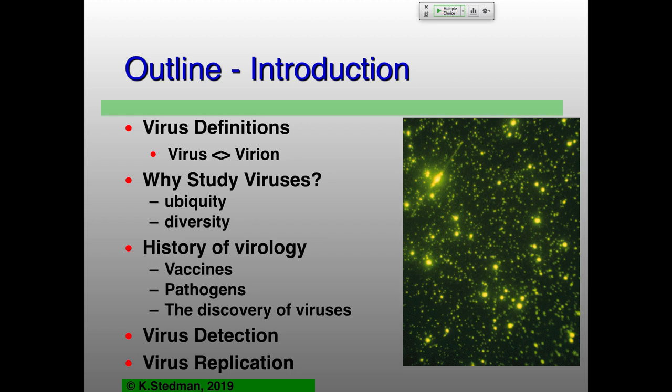Why should we study viruses? Not because they make people sick, but because they're everywhere and they're incredibly diverse — much more so than the sickness aspects of things. And it depends on where we get to, but how they were originally discovered is interesting. One of the very first aspects about viruses — actually even before people knew about viruses — was vaccines. Vaccination happened before people even knew about viruses. Not surprisingly, the reason people started thinking about viruses was pathogenesis. Originally, plant viruses were the first ones to be discovered.